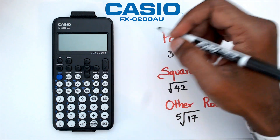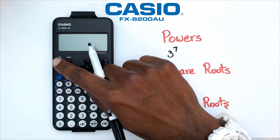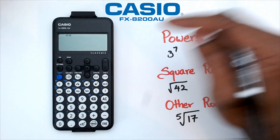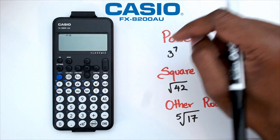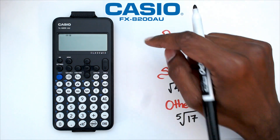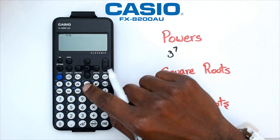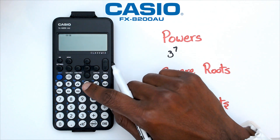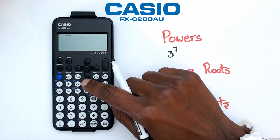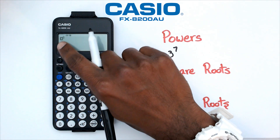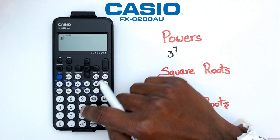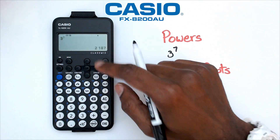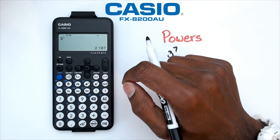So to figure out 3 to the power of 7, we're going to switch on the calculator and go into the calculate mode. In here, we're going to write 3 to the power of 7. There is this button — this is mainly the button we're going to be using. You can click on it and you'll see two boxes coming up, so you put 3 as the base and 7 as the power, and you would get 2,187 as the answer.